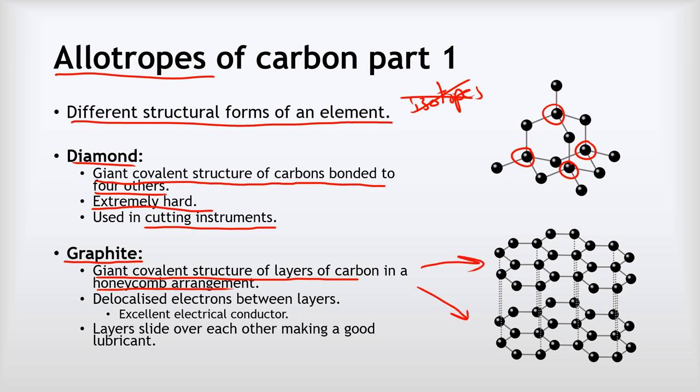If we look at this, each of our carbons is bonded to three other carbons. That means only three of its four outer shell electrons have been used, and what that means is the remaining electrons are actually delocalized between the layers.